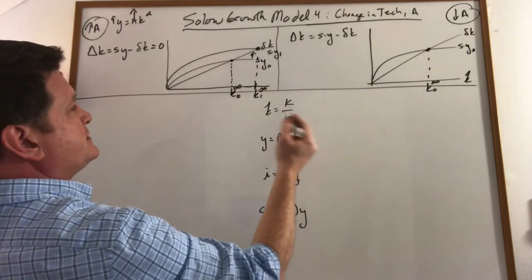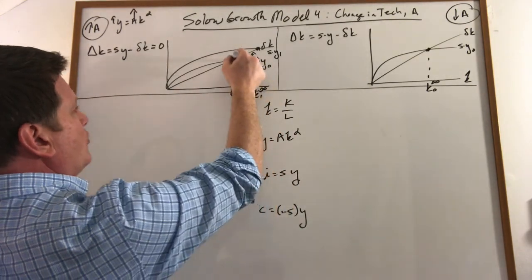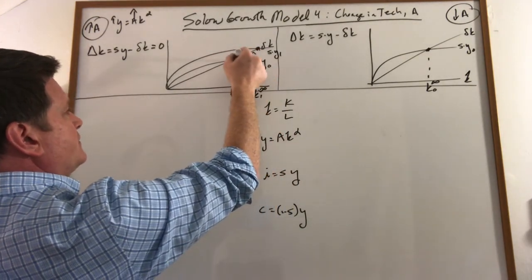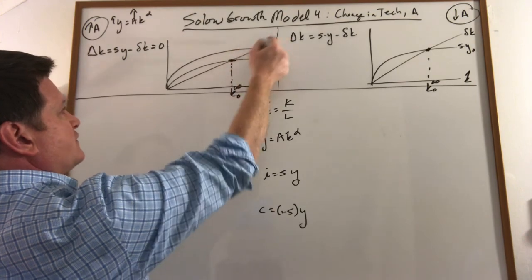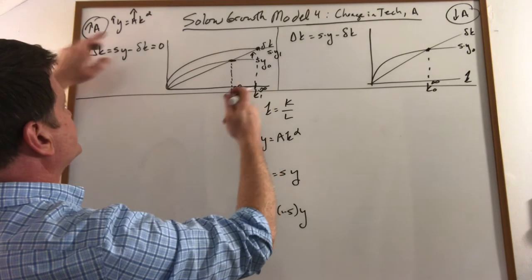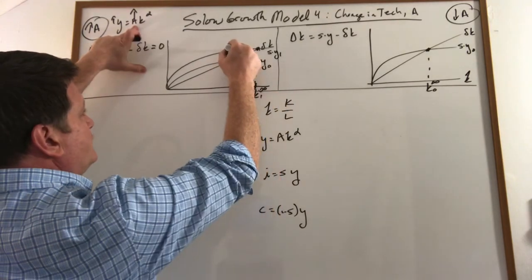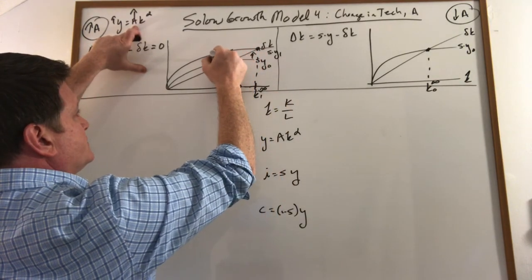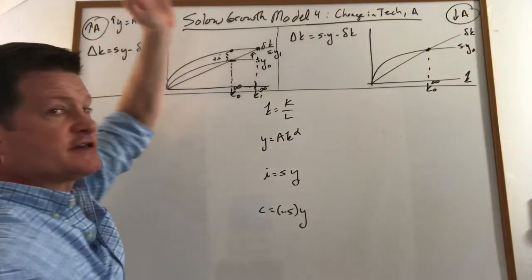So what happens initially at our old level of investment? We were just offsetting depreciation. Now that same amount of capital produces more because technology improved, and our amount of investment just increased. That's extra investment.